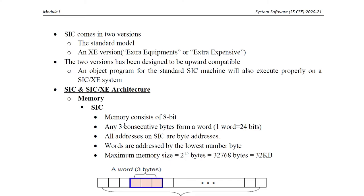SIC-XE is the next version of the SIC machine. XE stands for Extra Equipment or Extra Expensive. Now we are going to see the architecture of SIC and SIC-XE.